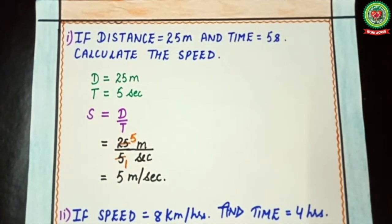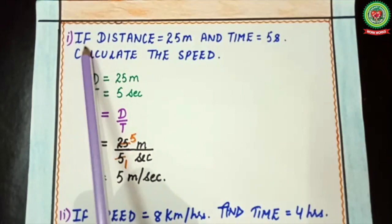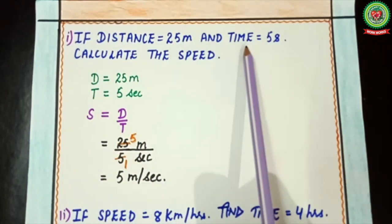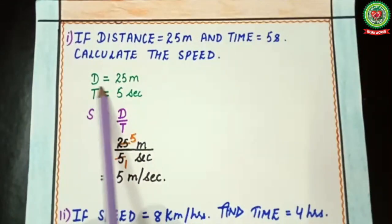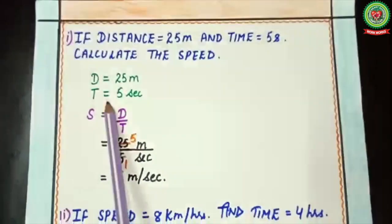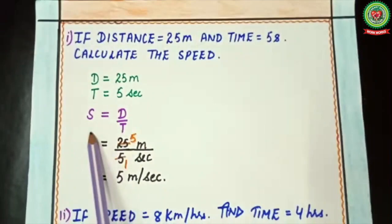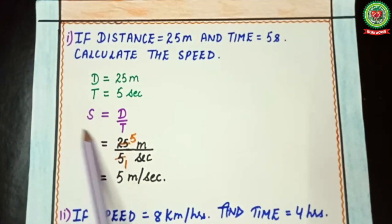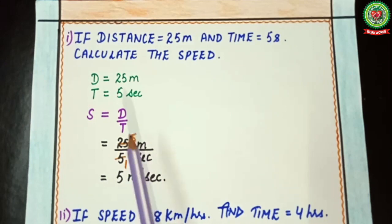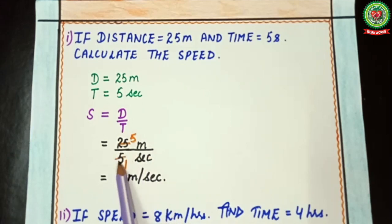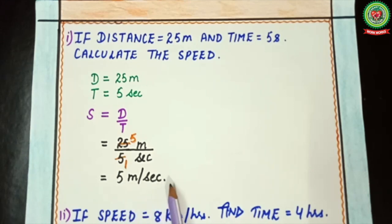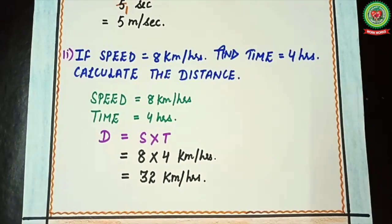First example: if distance equals 25 meters and time equals 5 seconds, calculate the speed. Given: distance = 25 m, time = 5 s. Using speed = distance divided by time: 25 divided by 5 equals 5. So speed equals 5 meter per second.